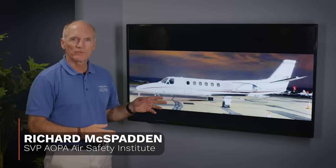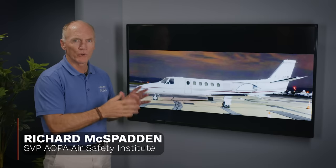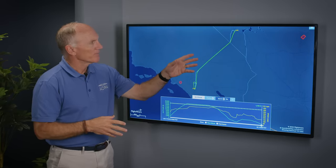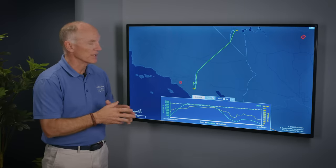Let's take an early look at the Citation 550 crash at French Valley, California near Murrieta.